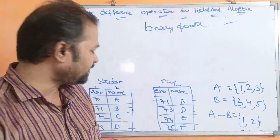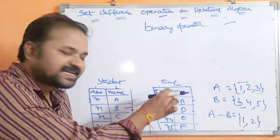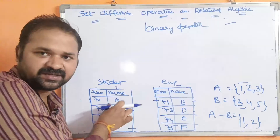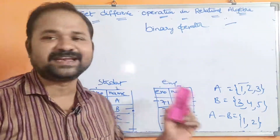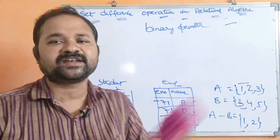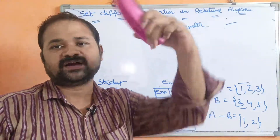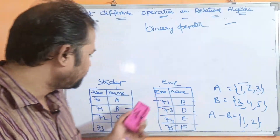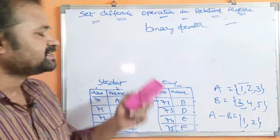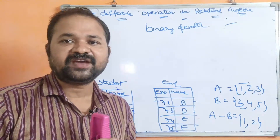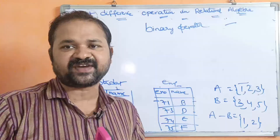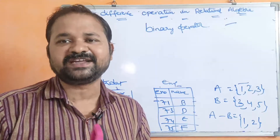The set difference operator gives a set of rows which are in the first relation but not in the second relation. Before performing set difference, we have to check two conditions. Only if those two conditions are satisfied can we perform the set difference operation.